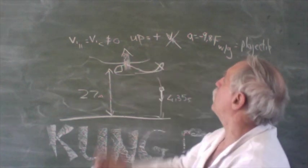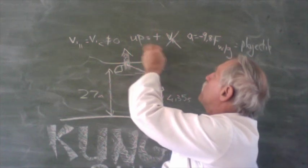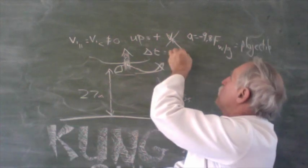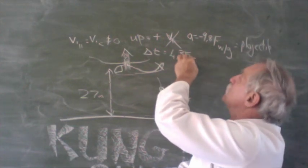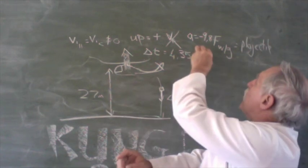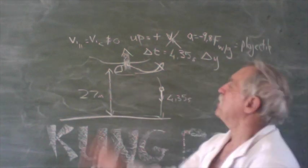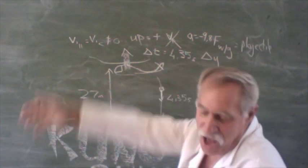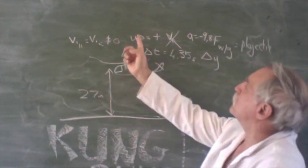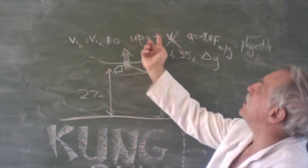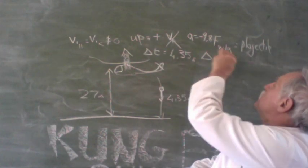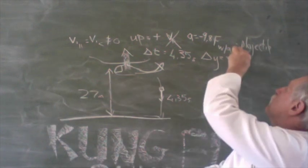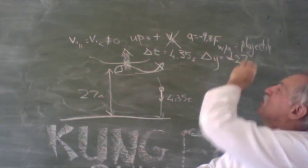Time. Camera. Delta time equal four comma three five seconds. And delta Y. Y down. Camera fall down. Camera fall up? No. Camera fall up, ha ha ha, stupid. Camera fall down. Down. Negative. Delta Y equals negative. Camera fall down 27 meters.